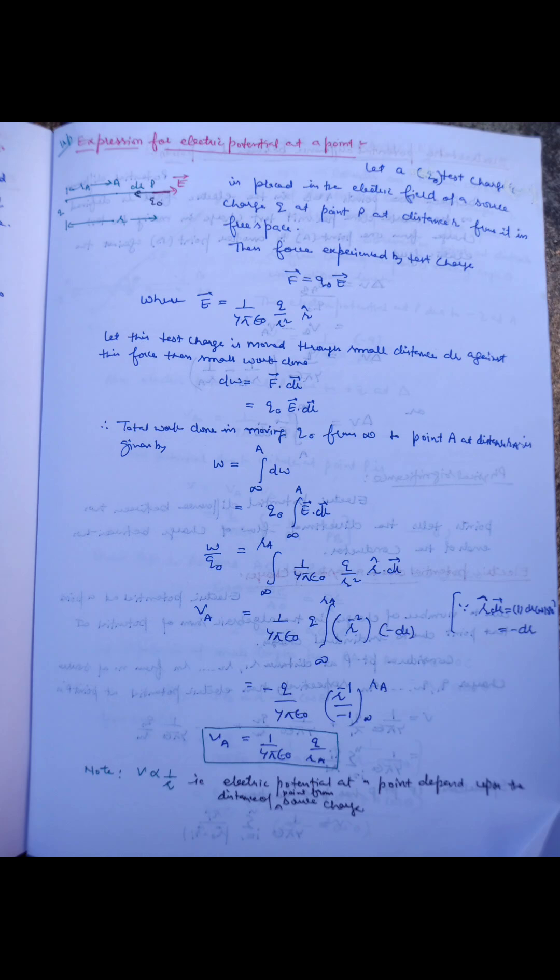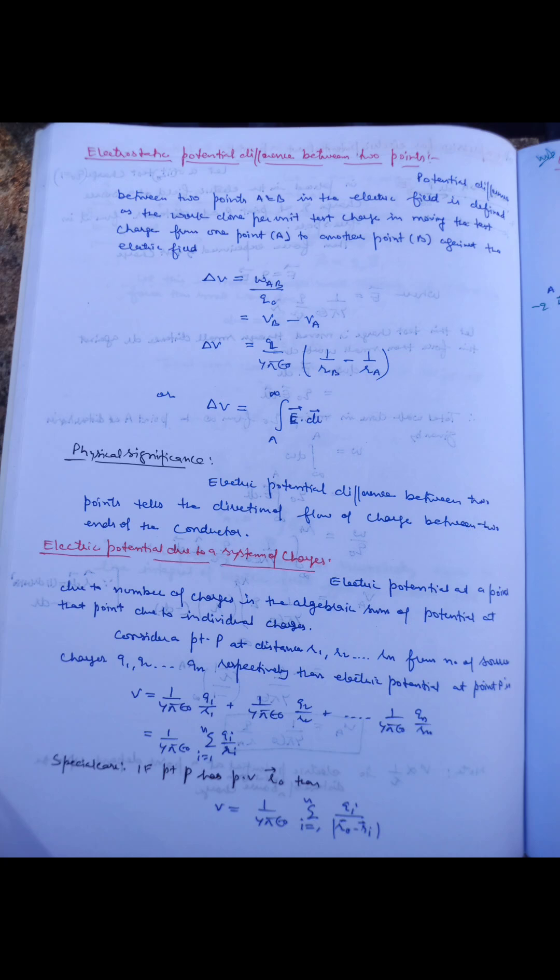When we substitute the value of electric field, i.e., E = 1/(4πε₀) × q/R², then potential at a point comes out to be V = 1/(4πε₀) × q/R, where q is the source charge and R is the distance of the point at which potential has to be calculated.